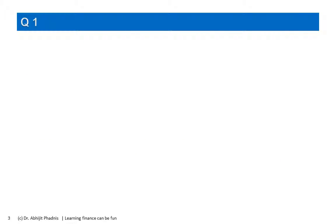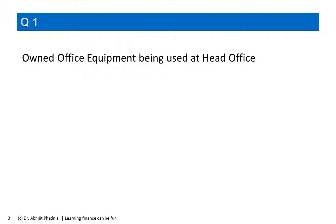Question one: owned office equipment being used at head office. You have to tell me which category it belongs to out of those seven, and then which financial statement would capture it. I am sure you guessed it right. This is an asset and it will be in the balance sheet.